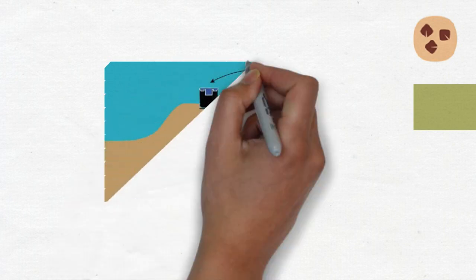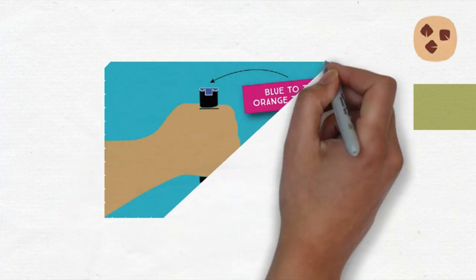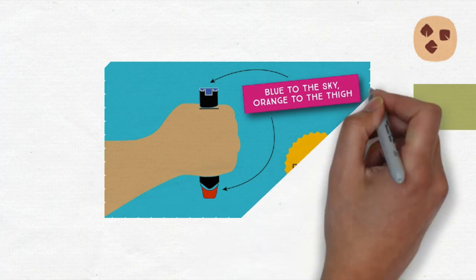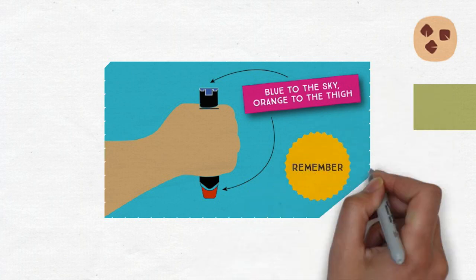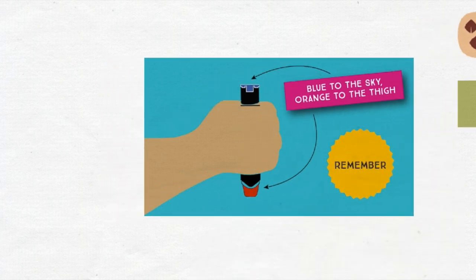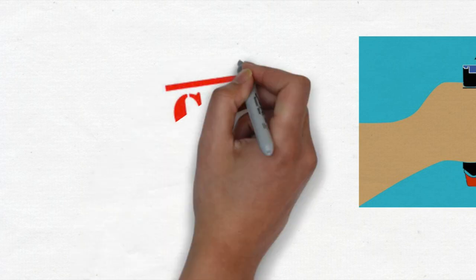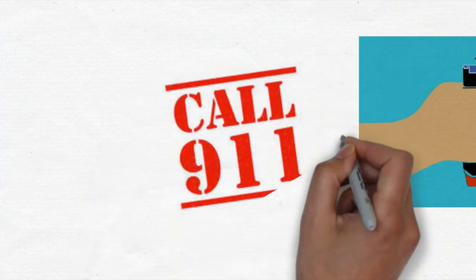If a child starts having serious allergic symptoms, give the epinephrine autoinjector right away. Remember the phrase: blue to the sky and orange to the thigh. Also give it right away if the symptoms involve two different parts of the body, like hives with vomiting.